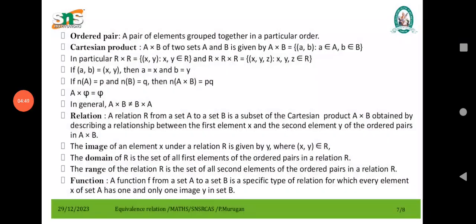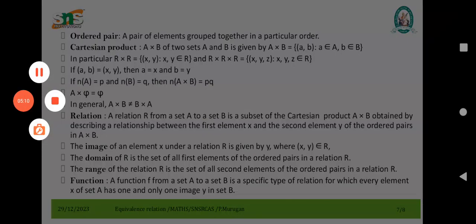The range is the second element of the ordered pair in a relation capital R. A function F from a set A to B is a specific type of relation for which every element X of set A has one and only one image, an element Y. That is the main idea. Thank you.